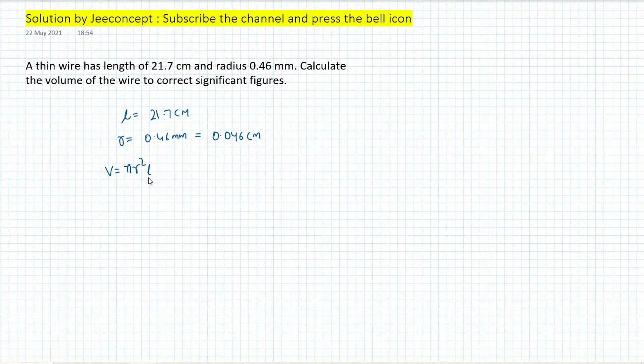Here H is L. If we feed these values, this will become 22 by 7 into 0.046 square, here it is decimal, into 21.7.